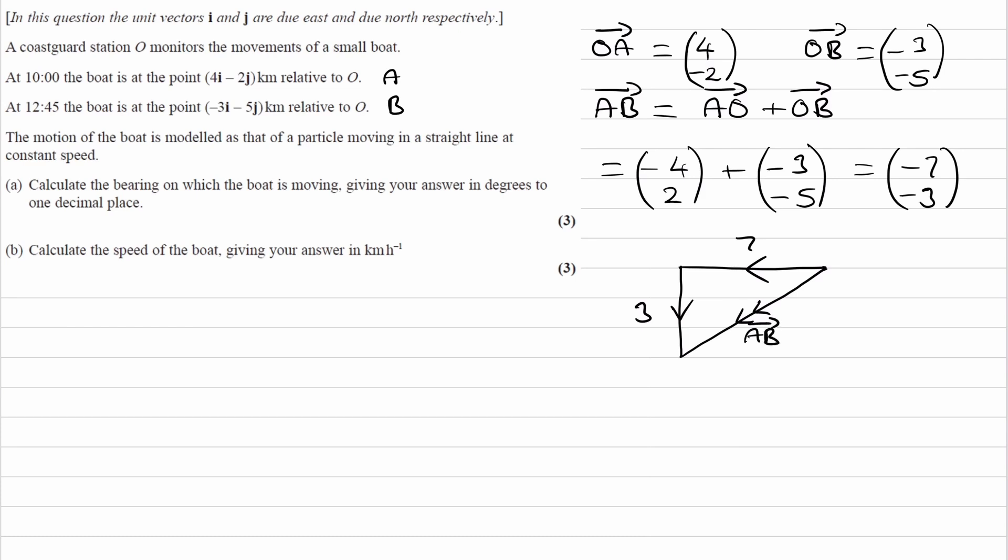We're trying to work out the angle that this vector makes from the north line, which is this angle here. To work out that angle, we know that this is 90. I'm going to work out this theta. Using SOHCAHTOA, tan theta is the opposite side over the adjacent. Theta will then be equal to inverse tan of 3 over 7, which is 23.2 degrees.